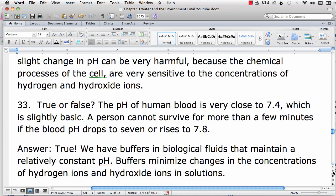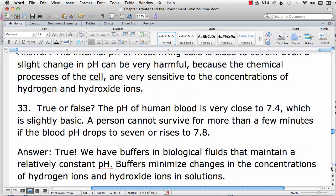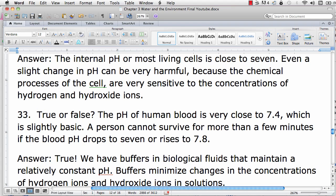The internal pH of most living cells is close to 7. Seven is the midpoint of the pH scale. Even a slight change in pH can be very harmful because the chemical processes of the cell are very sensitive to the concentrations of hydrogen and hydroxide ions.